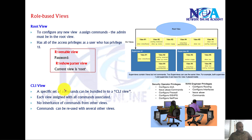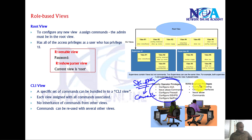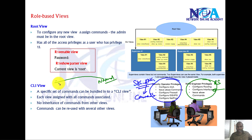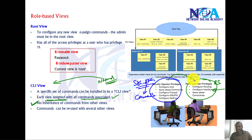The CLI view is the view we are going to create — for example, a security engineer view. We can create a new view and associate specific commands to it. Similarly, I can create another view for a routing switching engineer and associate specific commands to them. These normal views are referred to as CLI views. There is no inheritance of commands from one view to another, unlike privilege levels.